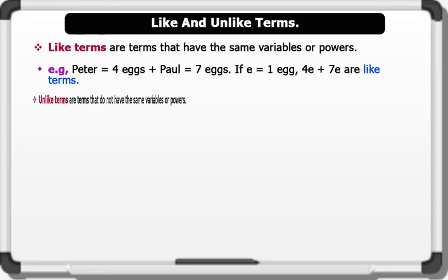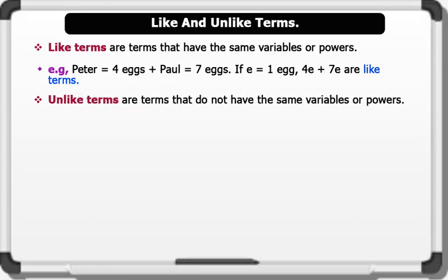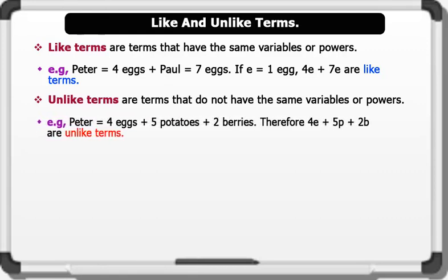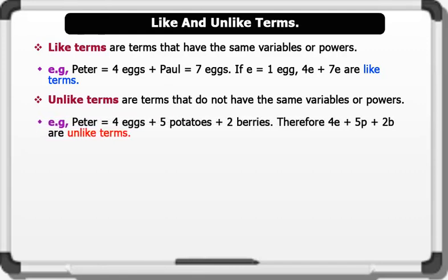Unlike terms are terms that do not have the same variables or powers. For instance, Peter alone has four eggs, five potatoes, and two berries, represented as 4E plus 5P plus 2B respectively. This expression is called unlike terms because they represent different variables. Let's now identify the following as either like or unlike terms.